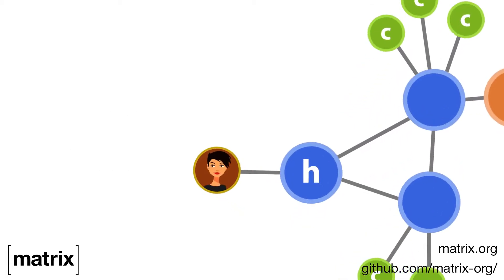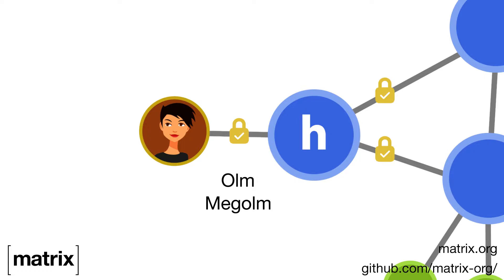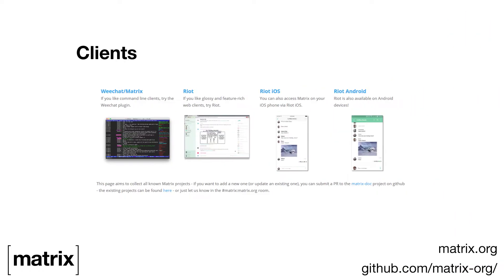In the Matrix ecosystem, anyone can run their own server, and you can also end-to-end encrypt your data using the Olm and Megolm ratchets. The Matrix ecosystem has been growing for two years.